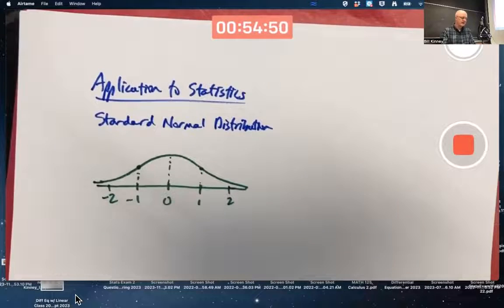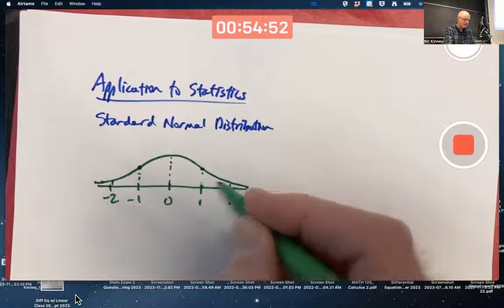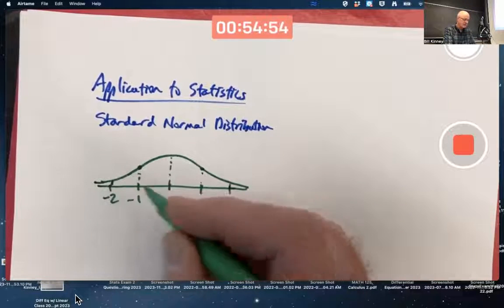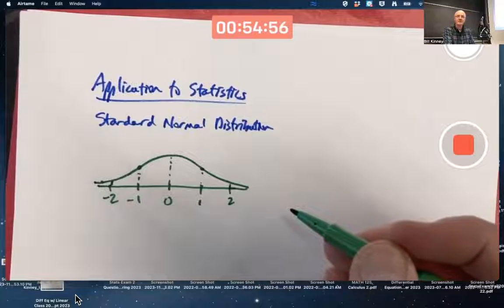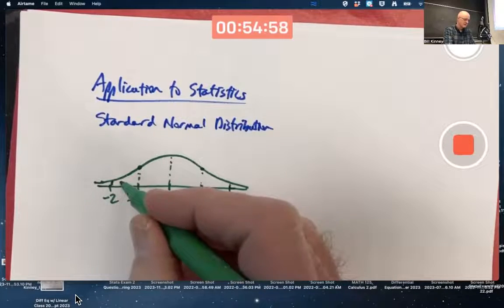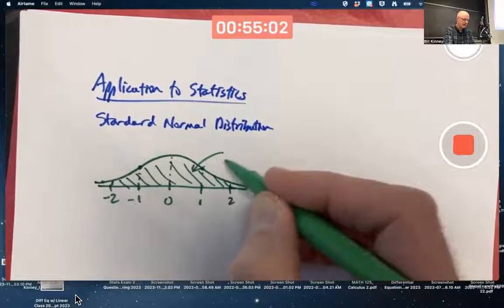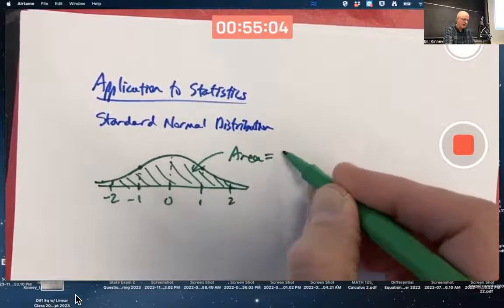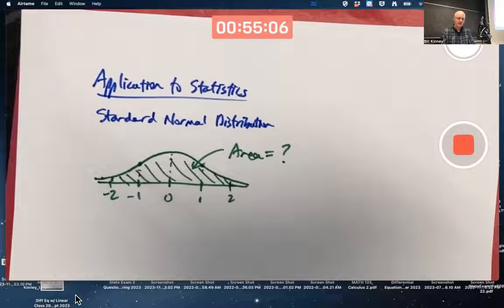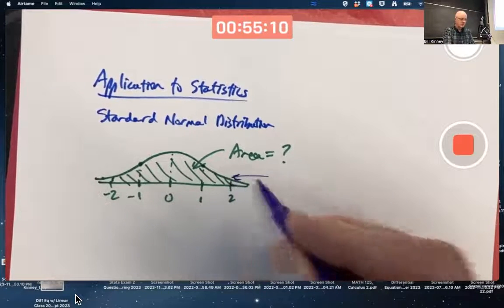We might be wondering, in a statistics class, what is the area under this curve between negative 2 and positive 2? What is this area that I'm shading? Area equals question mark. I need a formula for this standard normal curve.